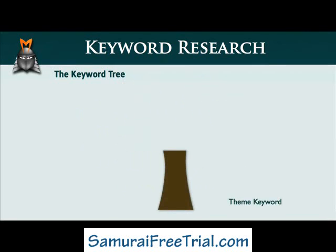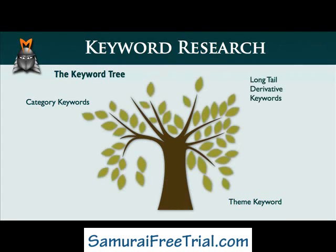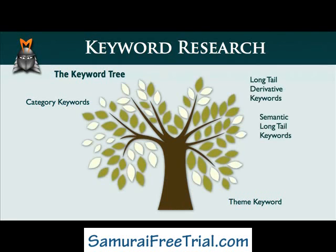We also discussed how to identify several category keywords which were related to your theme keyword and also had a reasonable amount of traffic and an acceptable level of competition. These category keywords make up the branches of your keyword tree. Today, I'd like to introduce you to two additional types of keywords. The first type are called long-tailed derivative keywords and the second type are called semantic long-tail keywords. These keywords give your website greater breadth and relevancy and are equivalent to the leaves on your keyword tree.